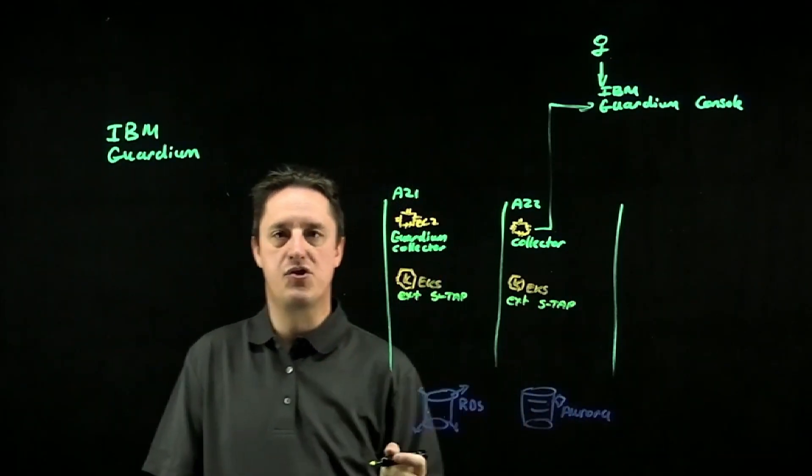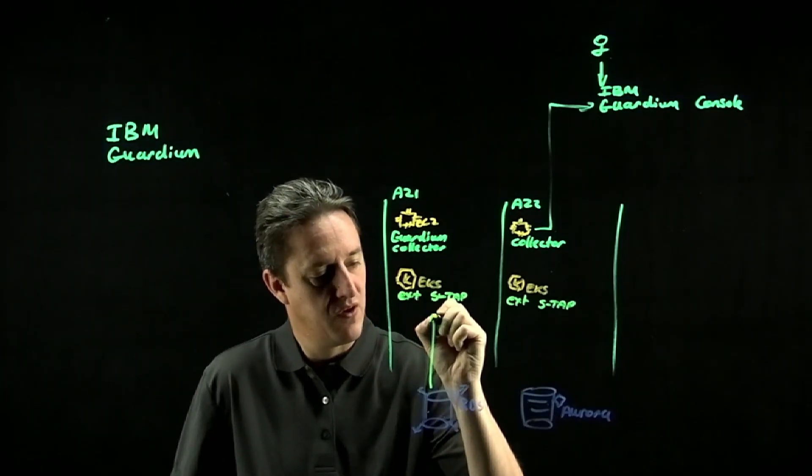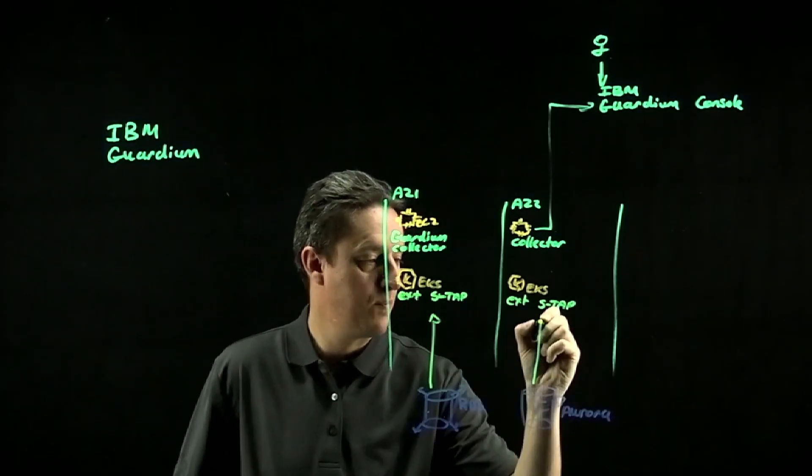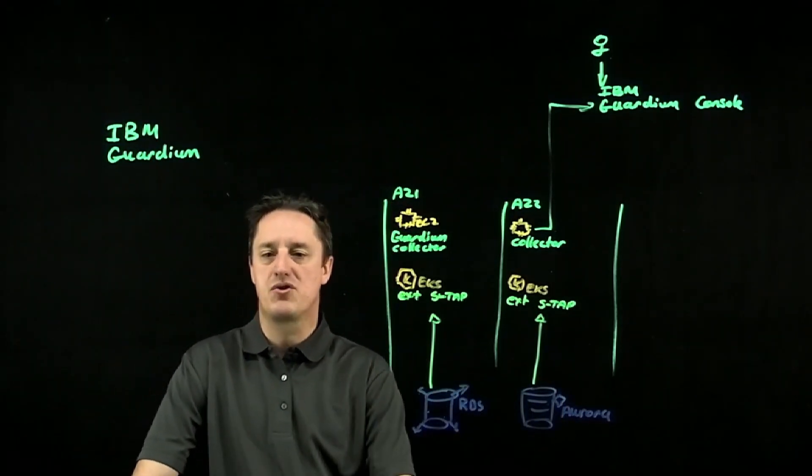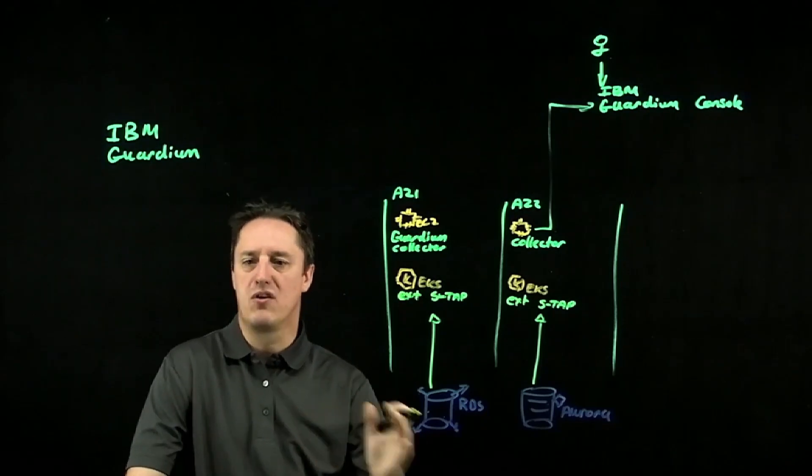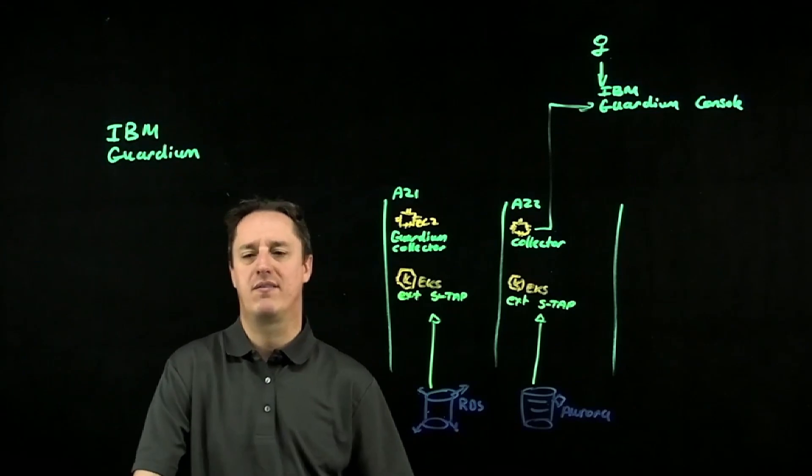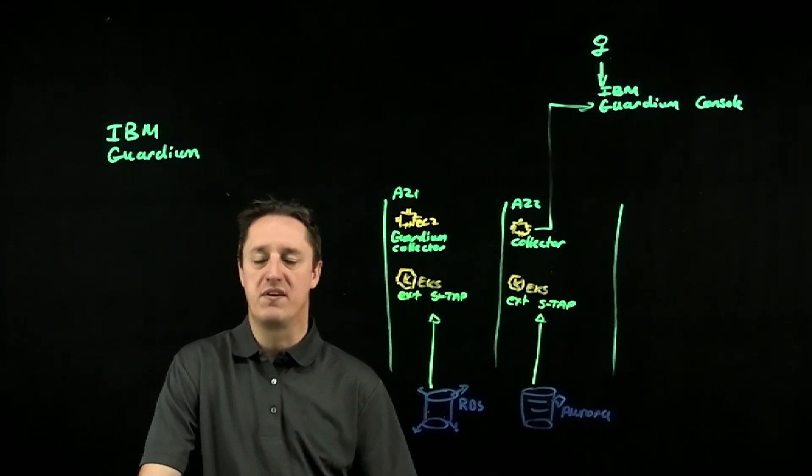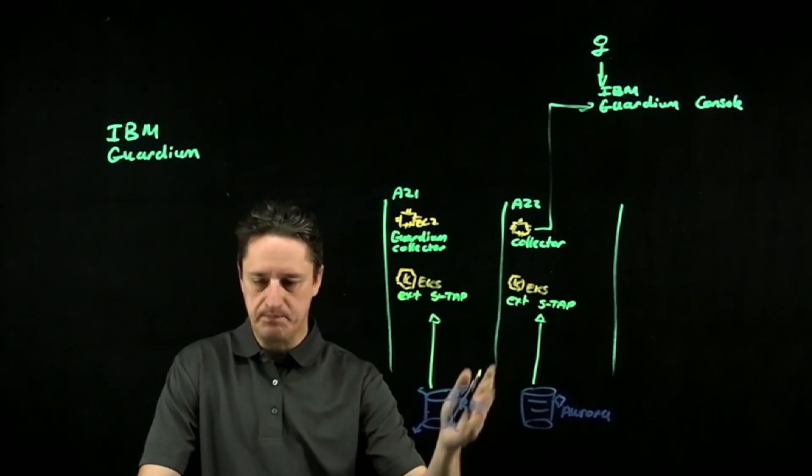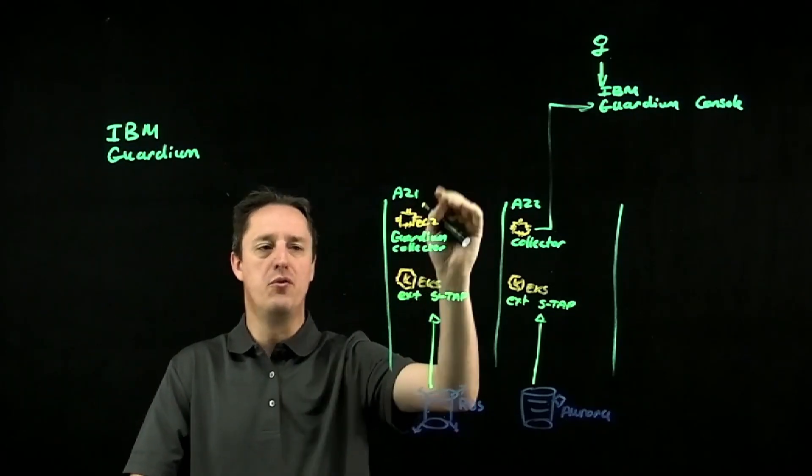And this agent will have permissions to interact with my databases and basically pull the telemetry and information from the database engine as well as from the database interactions. So any interaction with the database, whether that is a DML statement or a DDL statement, if it is an administrative function, all of that information gets collected and passed through the collector.